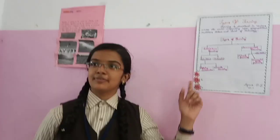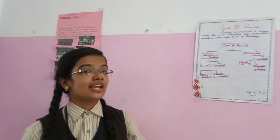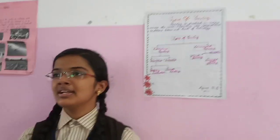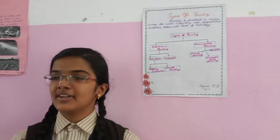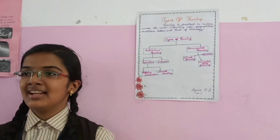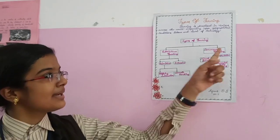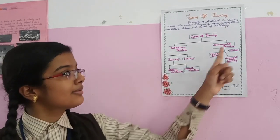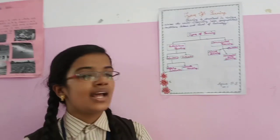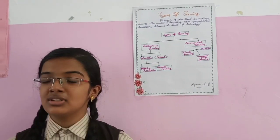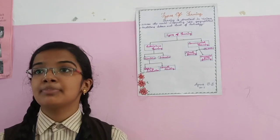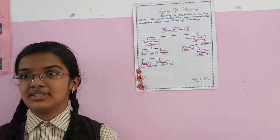Hi, I am Agnes and I am here to explain the types of farming. Farming is a practice that is very variable, depending upon the geographical condition, labor, and development of knowledge. It can be classified into two types: subsistence farming and commercial farming. Subsistence farming is divided into two types: primitive subsistence and intensive subsistence.